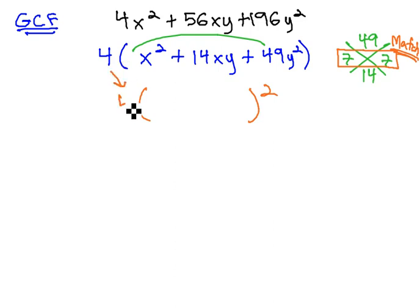As we do, don't forget the GCF is still in front. To factor the perfect square, we take the square root of the first term, which is x, and the sign from the middle, plus, and the square root of the last term, 7y.